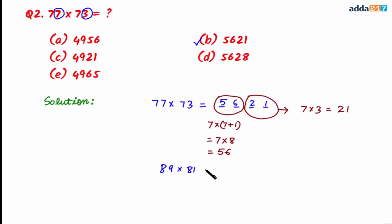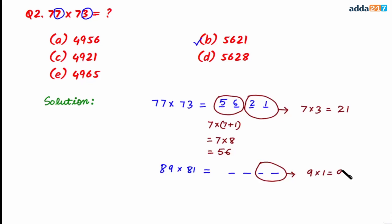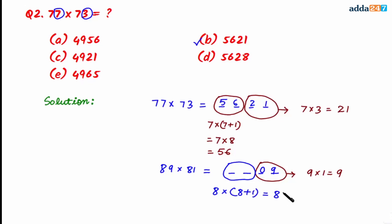For better understanding, let's try another example: 89 multiplied by 81. The last two digits are the product of 9 and 1, which is 9, written as 09. For the first two digits, the tens digit is 8; multiply 8 by 8 plus 1, giving 8 multiplied by 9, which equals 72. So the first two digits are 7 and 2, and the product is 7209.